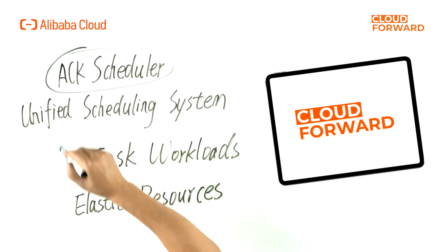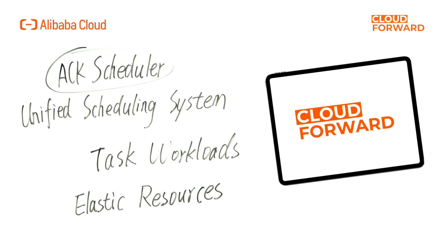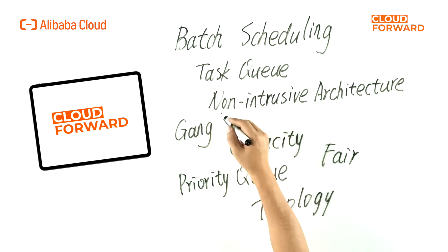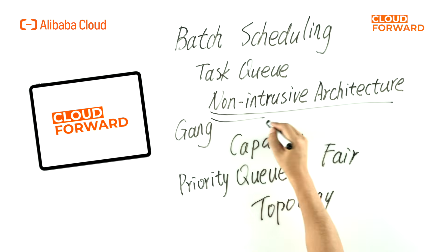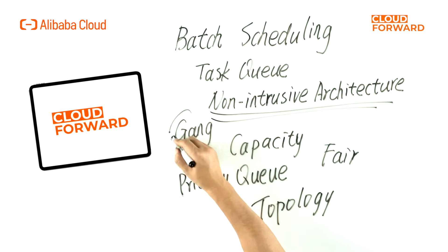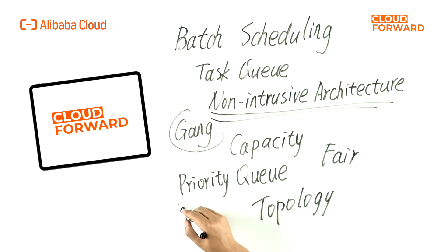ACK Scheduler, an extension mechanism based on the Kubernetes scheduling framework, provides a unified scheduling system for different task workloads and elastic resources. It natively implements batch scheduling, featuring task queue, non-intrusive architecture functionality, and support for complex scenarios like gang, capacity, priority queue, fair, and topology.